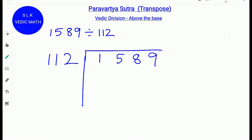First, find the number of digits in the dividend 1589, which is 4. Next, find how many digits are in the divisor 112. 112 has 3 digits. Subtract 4 minus 3, which is 1. Add 1 more to that: 1 plus 1 is 2. So the quotient will be 2 digits.